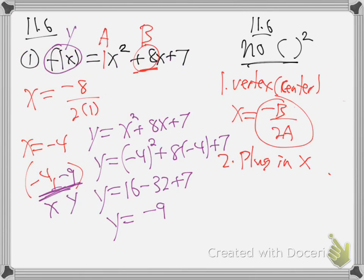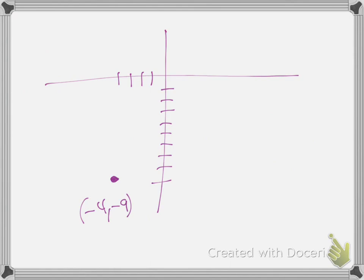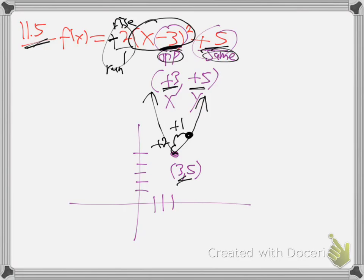Where does the graph go from here? What do you think we do? We got our first dot - there's the center. Once you've got the center of the U shape, you need one other dot, right? Now how did we do it in 11.5? Once we had our center dot - which was much easier, it was just opposite-same - how did we get the second dot?